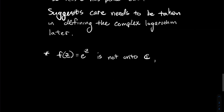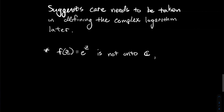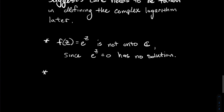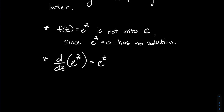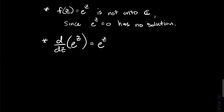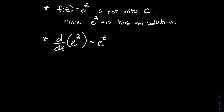What else is going on with the complex exponential? It's definitely not onto all the complex numbers, for the same reason the real exponential wasn't onto all real numbers — something like e^z = 0 has no solution; there's no z that makes that work. Remarkably, the derivative of the complex exponential is still just e^z, a cool property shared by both the complex and real exponentials.